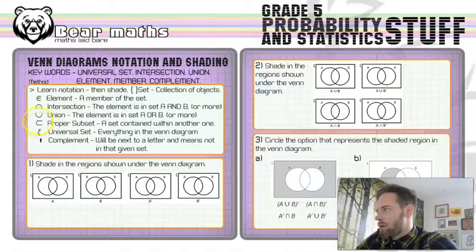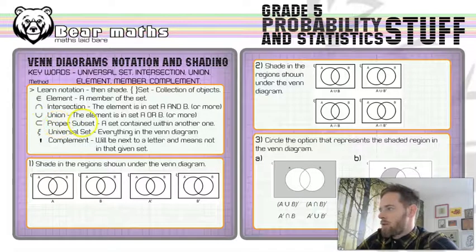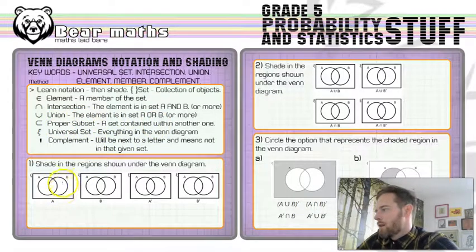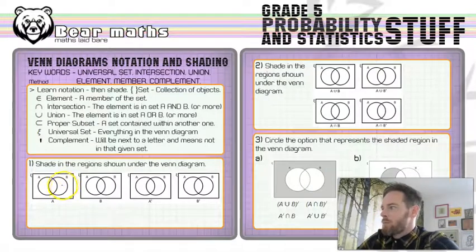The C-looking symbol, we don't often see this one, but it is something you do need to kind of be aware of. Proper subset, so a set that is contained within another one. So, there could be another, like, if you look on the first example, we could put a set C in set B. That would be a subset. So, C would be a subset of B.